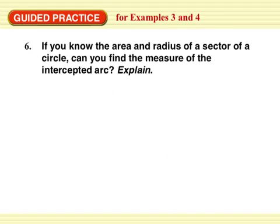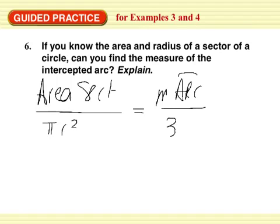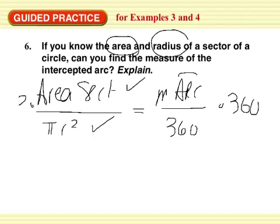Last one. If you know the area and the radius of a sector of a circle, how can you find the measure of the intercepted arc? Explain. Explaining would be using your equation. Area of the sector over area of the circle, pi r squared, equals measurement of the arc over 360. So it says we know the area and the radius of a sector. So I've got the area of the sector. The radius will give me the area of the circle. To find the measure of the intercepted arc, I would just multiply both sides by 360, and that would give me the measurement of the arc.